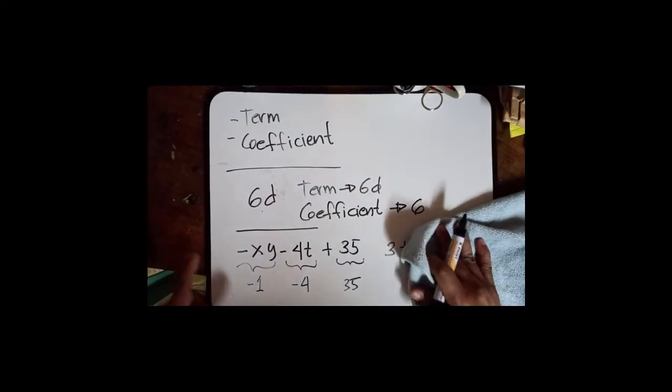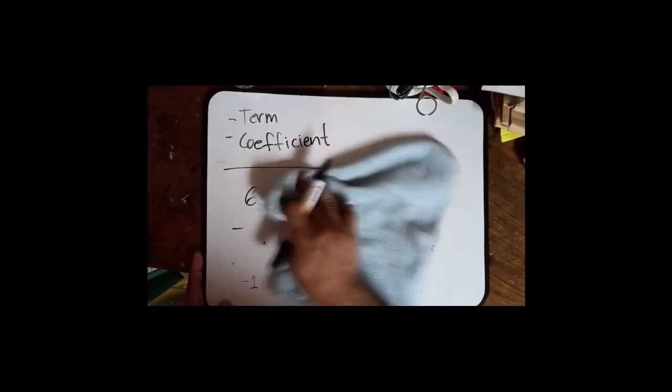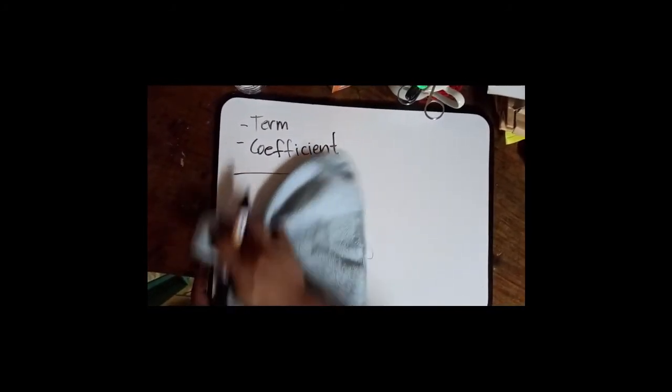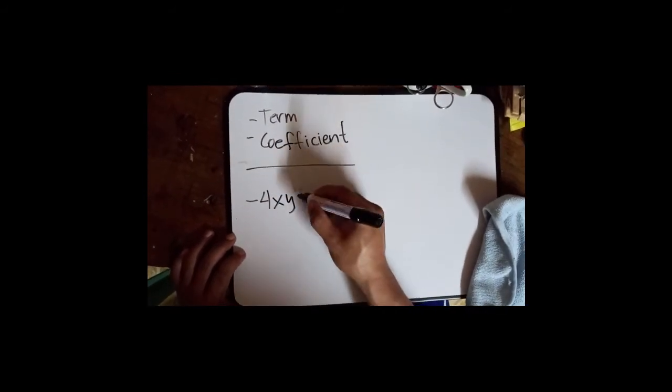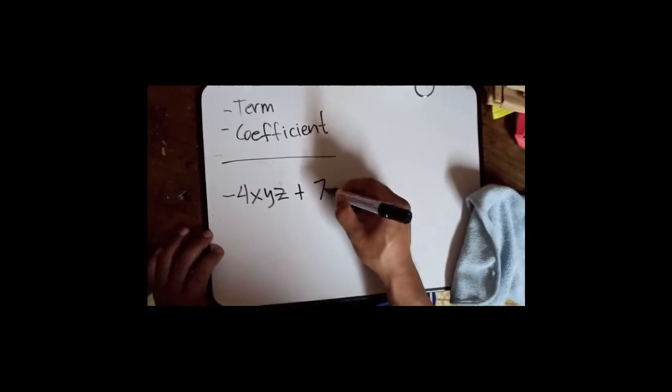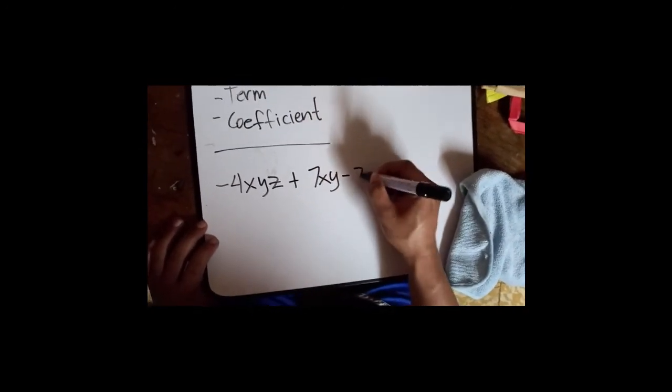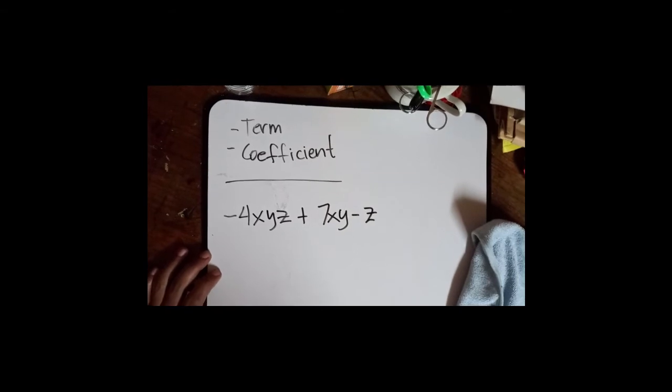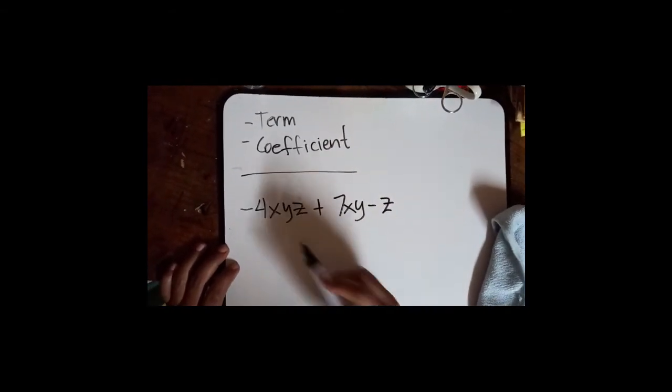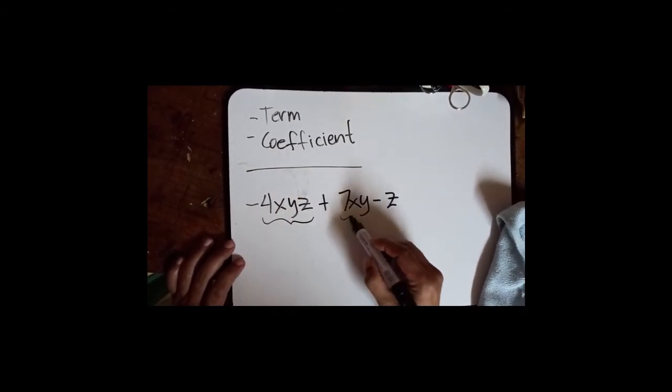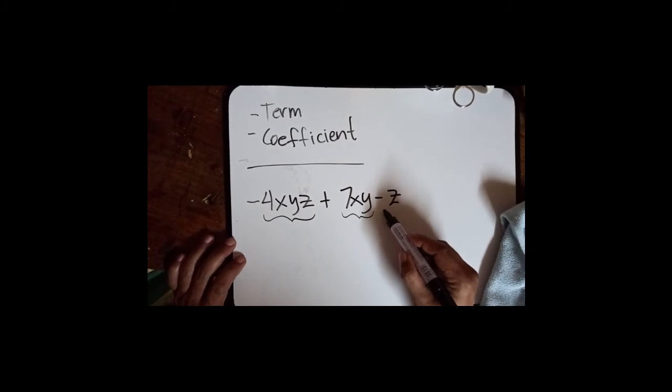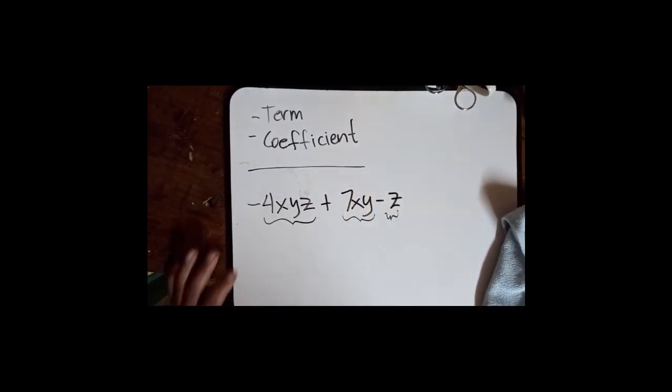Let's take another example. Let's say we have 4x times yz minus 7xy minus z. How many terms do we have here? We have 1, 2, and 3. Three terms.